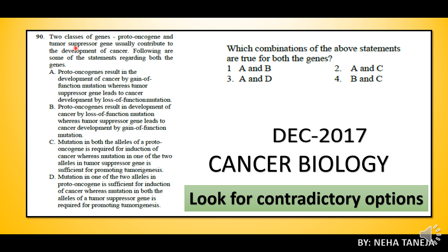Look at the first statement and the second statement — they are essentially the same, but one involves gain of function mutation and the other loss of function mutation. So, when studying Proto-oncogenes or Tumor suppressor genes, knowledge of either gain of function or loss of function is obviously necessary. You can see that both contradictory statements cannot simultaneously be correct — only one of them can be right. That means one option is very incorrect, so now we only have three options to consider.